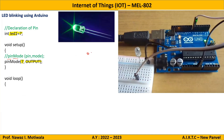For LED blinking, we need the LED to be on for some time, then off for some time, then on and so on — this should repeat. So this same logical sequence you have to write in terms of programming.